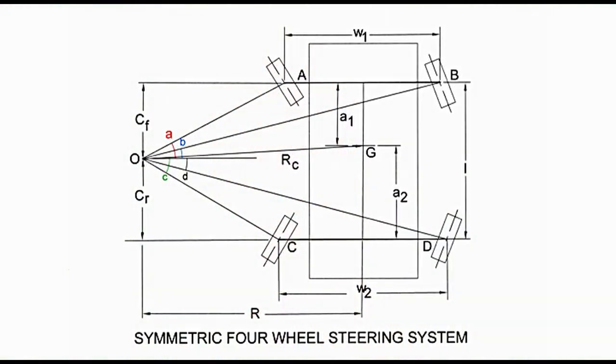Symmetric 4-wheel steering. In this system, inner front and rear wheels turn through the same angle. Similarly, outer front and rear wheels also turn through the same angle. Referring to the diagram that shows wheels in turned position: front wheels are turned inwards and rear wheels are turned outwards. Lines perpendicular to all 4 wheels meet at point O, which lies on the line in the middle of the wheel base.